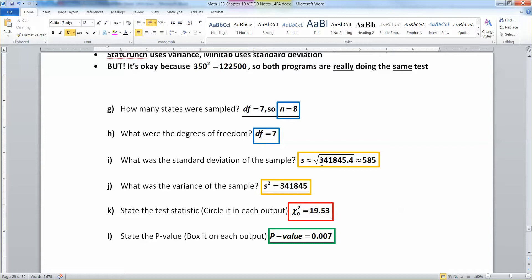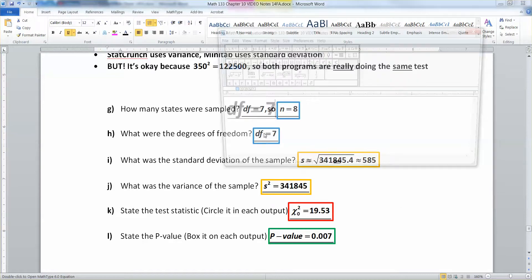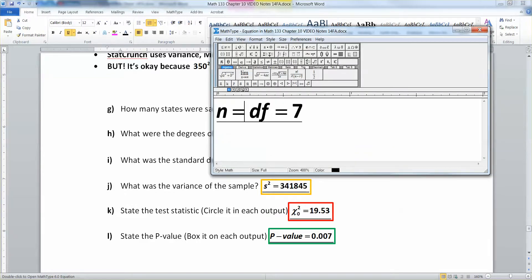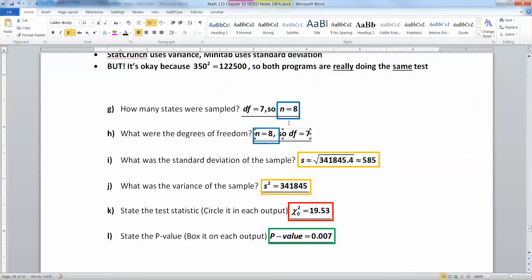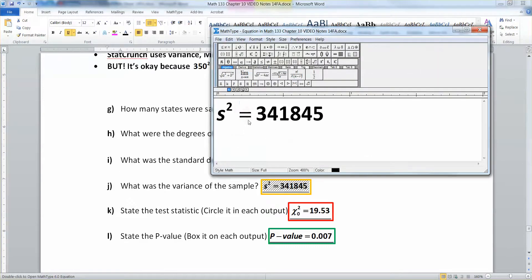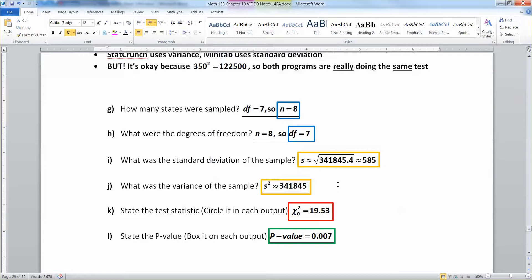I added in here s is the square root of 341,845.4. And I also threw in here, just real quick, degrees of freedom here is 7, that's why n equals 8, or vice versa, n equals 8, so the degrees of freedom is 7. And that's the actual answer part that we were interested in right there, the degrees of freedom. Now the variance is given in both programs, so it's kind of whichever one you want. It's an approximation because different programs will have different decimal places of accuracy. But it's about 341,845.